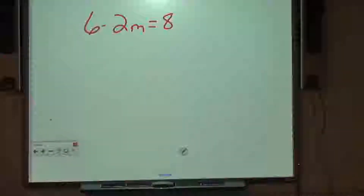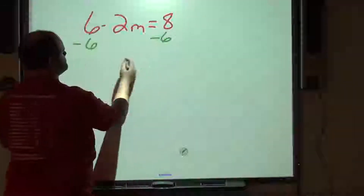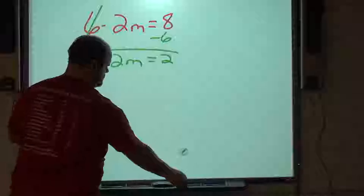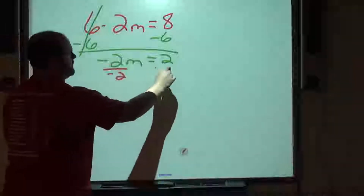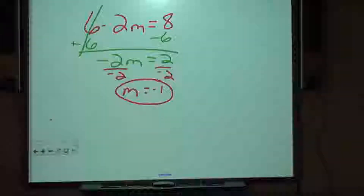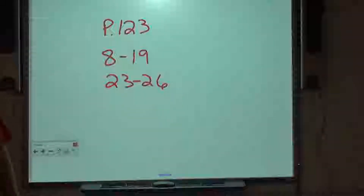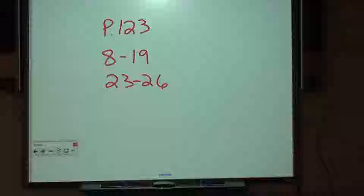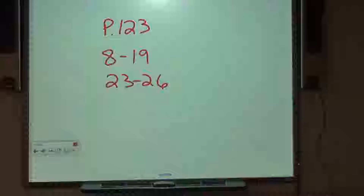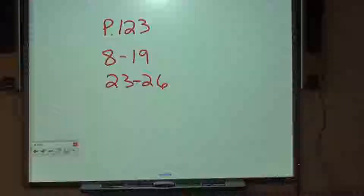Pause the video if you want to try the next one yourself. Subtract 6 — that cancels. Negative 2m — don't forget your negative sign. 8 minus 6 is 2. Divide by negative 2 on both sides: m equals negative 1. Here's your first assignment with two-step equations — page 123, problems 8 through 19 and 23 through 26.